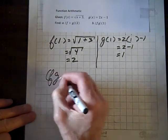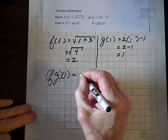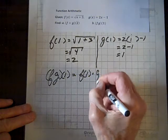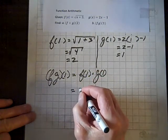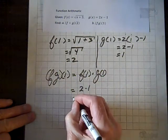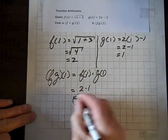f times g of 1 means f of 1 times g of 1. f of 1 is 2, and g of 1 is 1. So 2 times 1 equals 2. And we're done.